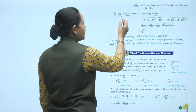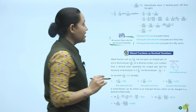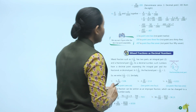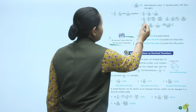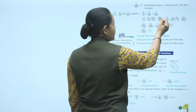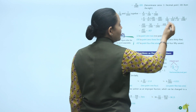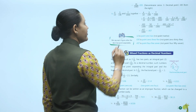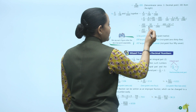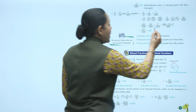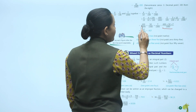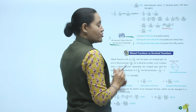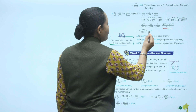Next: 4 upon 10, 5 upon 100, and 7 upon 1000 together. The largest denominator has three zeros, so convert all: 4 upon 10 becomes 400 upon 1000, and 5 upon 100 becomes 50 upon 1000. Now add: 400 upon 1000 plus 50 upon 1000 plus 7 upon 1000 equals 457 upon 1000. Written as a decimal: 0.457.